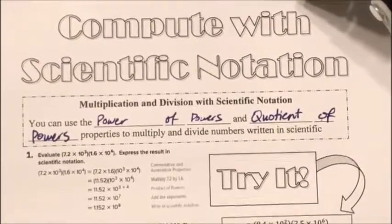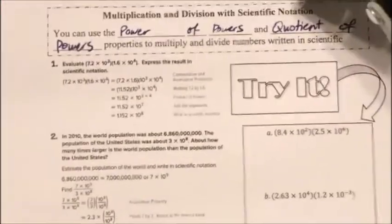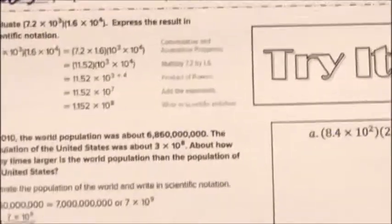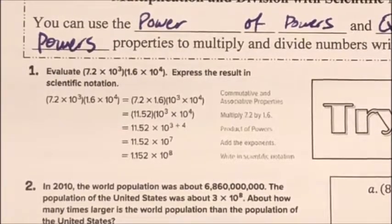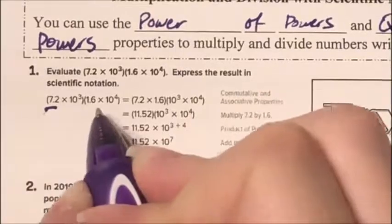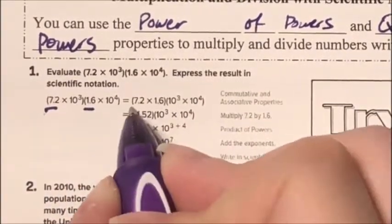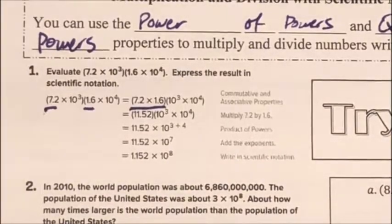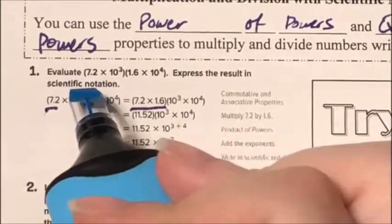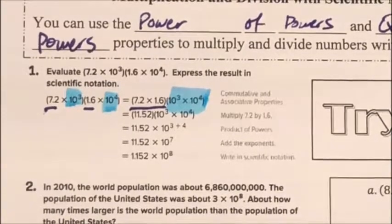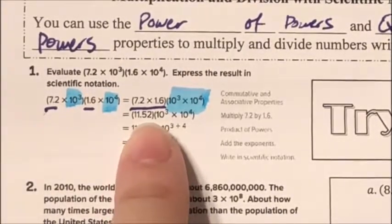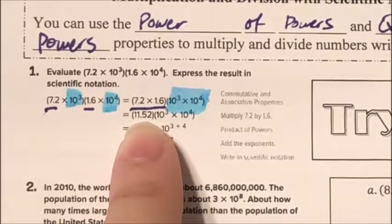Example one: evaluate 7.2×10³ times 1.6×10⁴ and express the result in scientific notation. I'm going to take the numbers 7.2 and 1.6 and multiply them together, then multiply the powers 10³ and 10⁴ together. So 7.2 times 1.6 gives me 11.52.